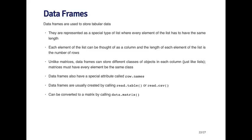Data frames have special attributes. The first is called the row name — every row of a data frame has a name, which can be useful for annotating the data. For example, each row might represent a subject enrolled in a study, with row names being the subject ID. Data frames are most often created by calling the read.table or read.csv functions, which we'll get into when talking about reading data into R.